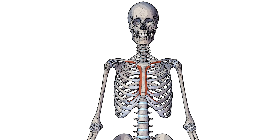We can see here highlighted in red the origins of the pectoralis major muscle. You can see the anterior surface of the medial half of the clavicle, the anterior surface of the sternum, and the superior six costal cartilages of the ribs.